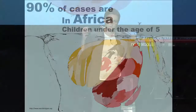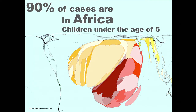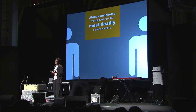This map shows the world according to the number of malaria deaths in each country. You don't see the US on this map, or Europe. You see a little bit of South America, a bit more of Southeast Asia and India, but you see a lot of Africa. That's because 90% of malaria deaths happen in Africa, and mainly occur in children under the age of five — the most vulnerable population. That's why I study the African mosquitoes, because they are the most deadly insects in the world.